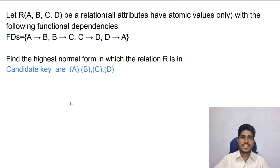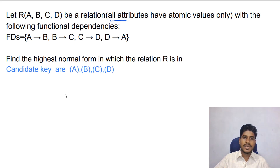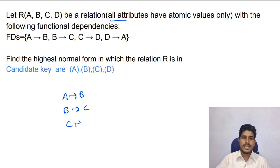First we check whether this relation is in first normal form — all attributes have atomic values, so it is in first normal form. Now we check second normal form for partial dependency. A determines B: A is a candidate key. B determines C: B is also a candidate key. C determines D: C is also a candidate key. D determines A: D is also a candidate key.